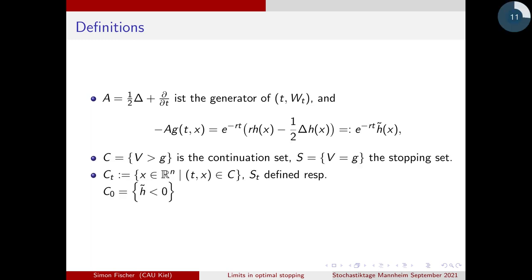The continuation set and stopping set are defined as usual. Importantly, we can find C_0 easily from general theory: C_0 is simply the region where h̃ is negative. So we can divide the whole space into the part where h̃ is negative and the part where it is non-negative, which will be important later on.